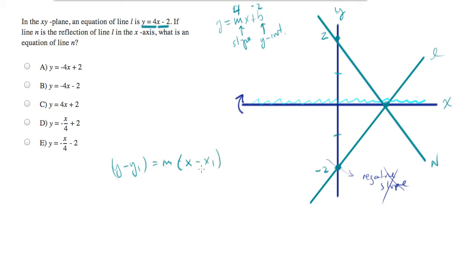Y minus y1 equals m times x minus x1, where m is the slope, y1 is the y-coordinate of a point, and x1 is the x-coordinate. So this is called point slope, and it's called that because you can build it if you have a point and you have a slope.